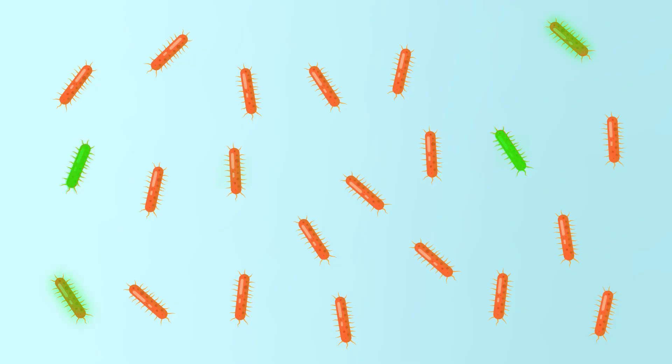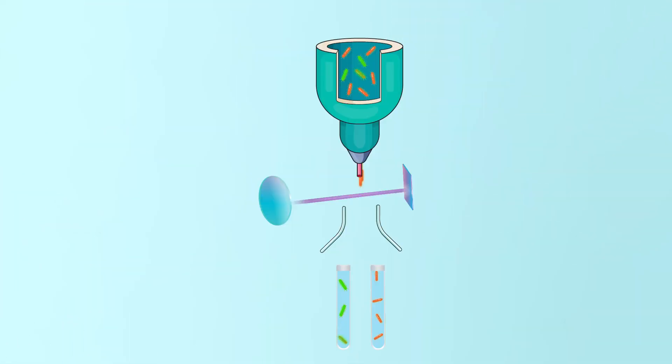These cells can then be isolated and collected using a technique called fluorescence-activated cell sorting, or FACS. FACS involves flowing the cells individually and rapidly past a fluorescence detector, which will detect and then divert fluorescent and non-fluorescent cells into separate collection tubes.